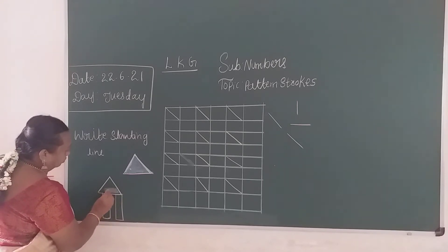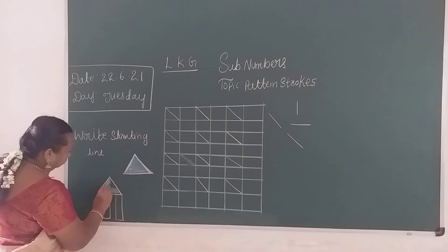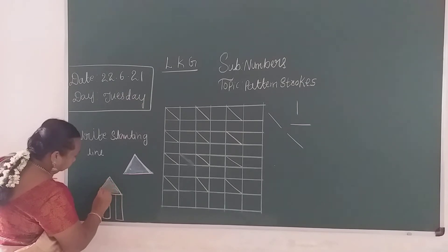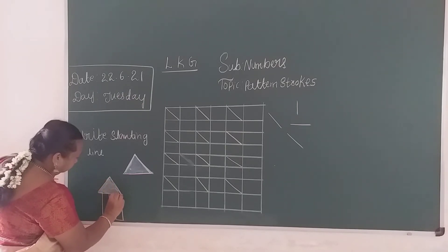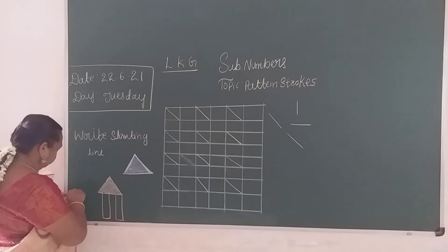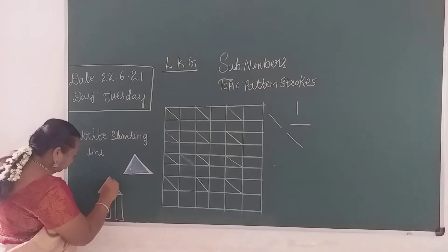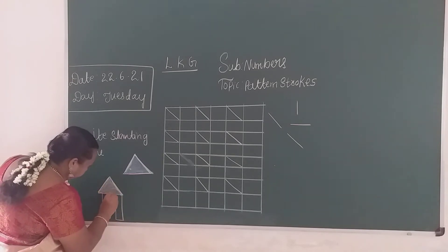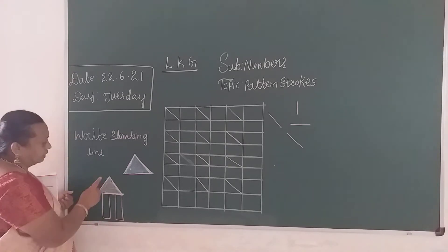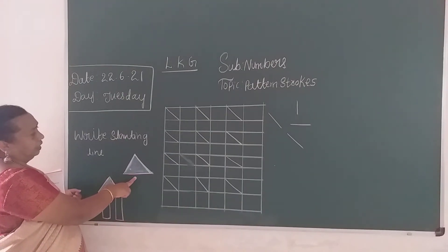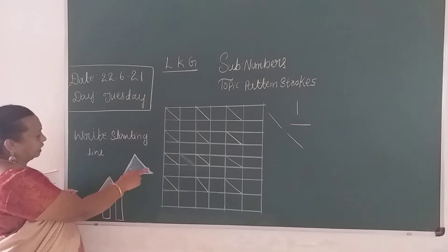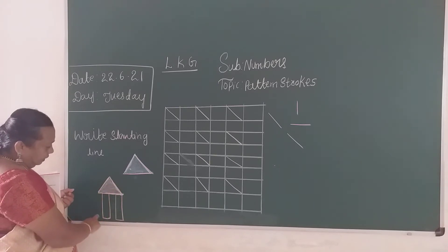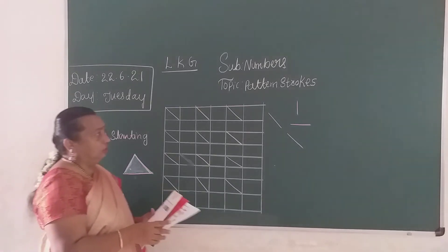What is it children? House. This one triangle. We are using slanting line — right and left slanting line, sleeping line, right and left slanting line, standing line, sleeping line. Now.